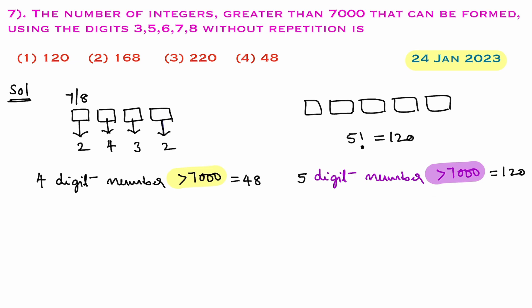So final answer is 48 plus 120. Therefore, total number of integers which are greater than 7000 formed using these digits without repetition is 48 plus 120, that equals 168. So answer for this problem is 168.